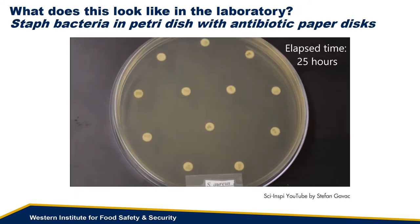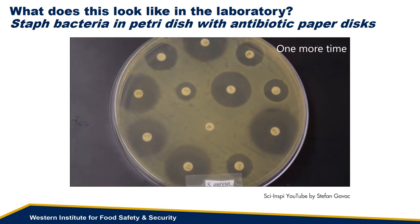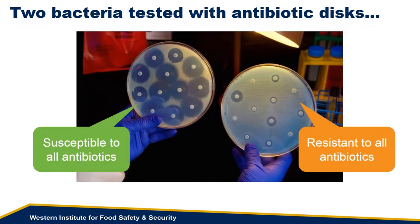So what does antibiotic resistance look like in a laboratory? This is a time-lapse photography spanning 25 hours of a petri dish seeded with staph bacteria. Over time, the growth of bacterial cells is impeded as they come in contact with antibiotics leaching out of these specially prepared paper discs. Eventually, you can see this strain of bacteria is sensitive to all but one of the antibiotics. Here we see two different types of bacteria grown out onto petri dishes. The plate on the left demonstrates that bacterial growth has been inhibited by each of the different types of antibiotics. Conversely, on the right, bacterial growth has remained virtually unchecked, even in the presence of a variety of different types of antibiotics.